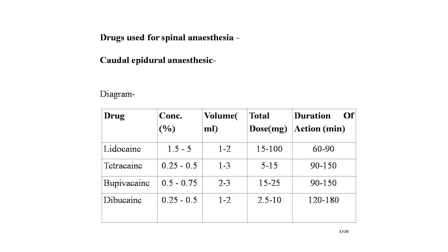The drugs used for spinal anesthesia are lidocaine, tetracaine, bupivacaine, and dibucaine. Lidocaine concentration is 1.5 to 5 percent, volume 1 to 2 ml, total dose 15 to 100 mg, duration of action 60 to 90 minutes. Tetracaine: concentration 0.25 to 0.5 percent, volume 1 to 3 ml, total dose 5 to 15 mg, duration 90 to 150 minutes.